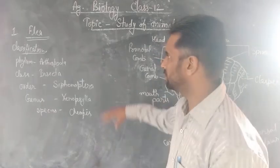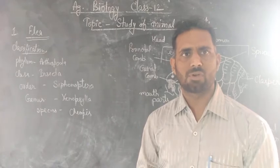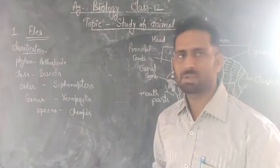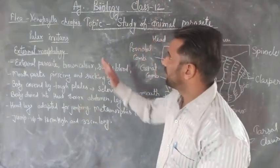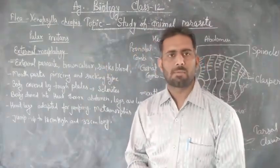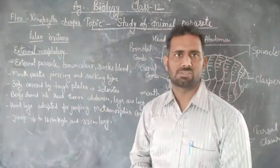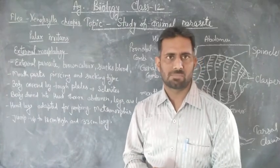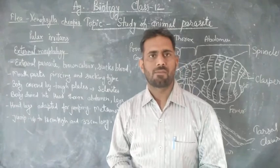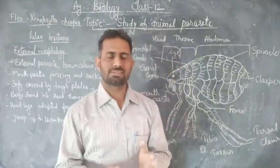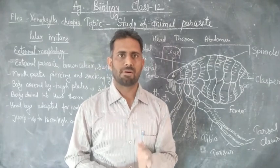Now we are looking at the general characters or morphology of fleas. The scientific name of fleas is Xenopsylla cheopsis, or another name is Pulex irritans. Fleas are small, wingless ectoparasites of birds and mammals.